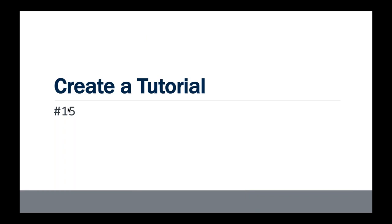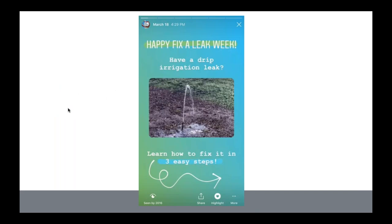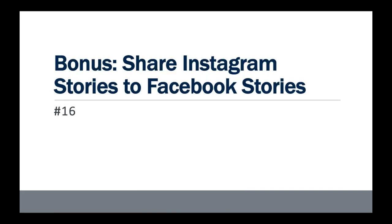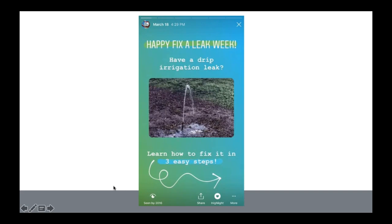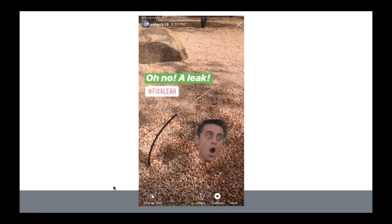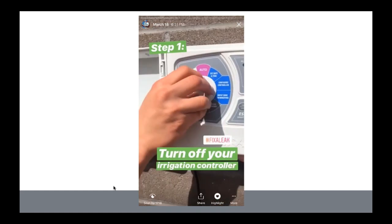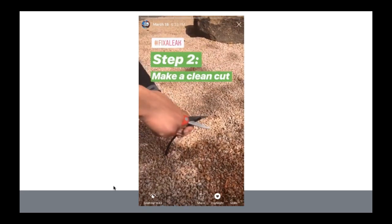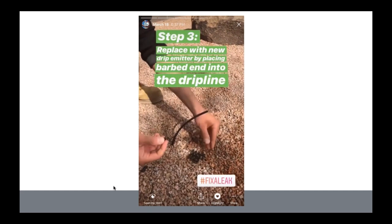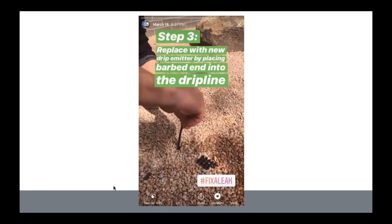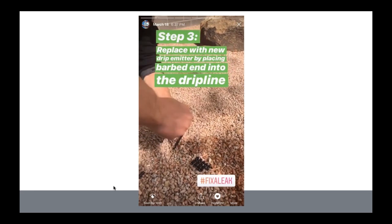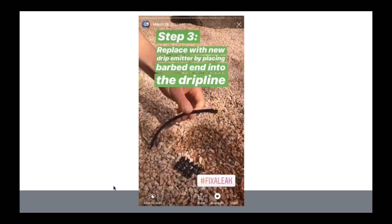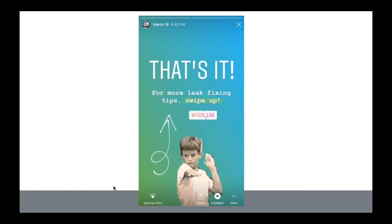Creating tutorials is a great way to break down something complicated and make it easy to understand. For example, we showed people how to fix a drip irrigation leak, going step by step: step one, turn off your irrigation controller; step two, make a clean cut; step three, replace with a new drip emitter by placing the barbed end into the drip line. Then if people want to learn more, they can swipe up for more information.